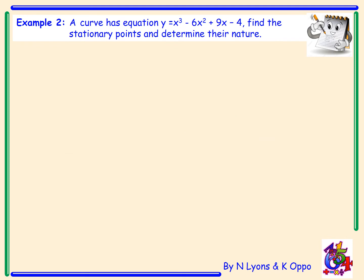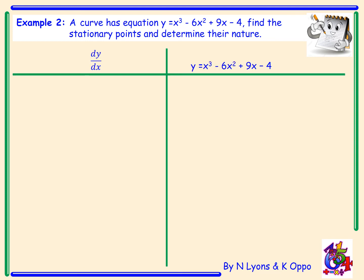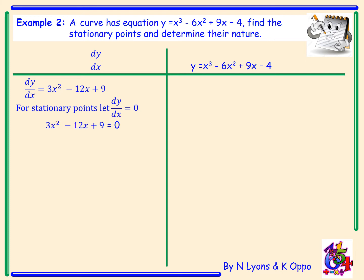Example 2. A curve has equation y equals x cubed minus 6x squared plus 9x minus 4. Find the stationary points and determine their nature. We split our page in two — derivative on the left-hand side and the original curve on the right. Finding our derivative we get 3x squared minus 12x plus 9. We set our derivative equal to zero to find our stationary points.